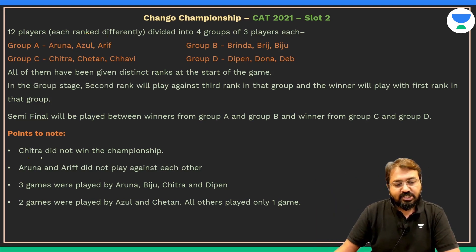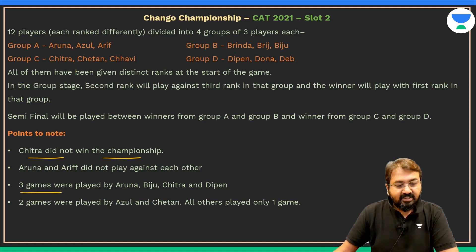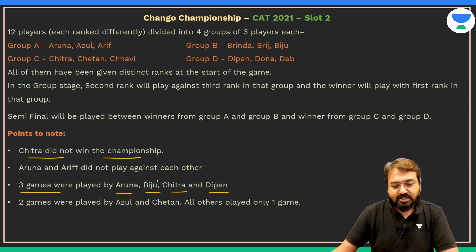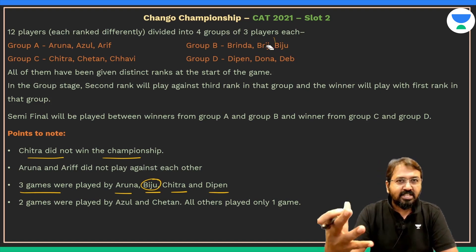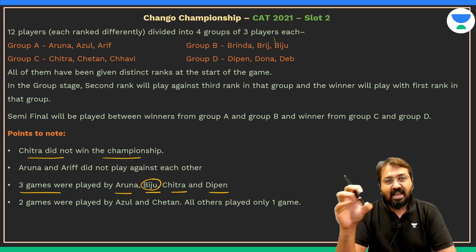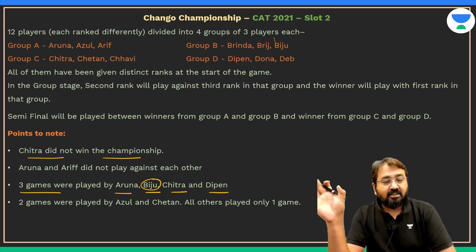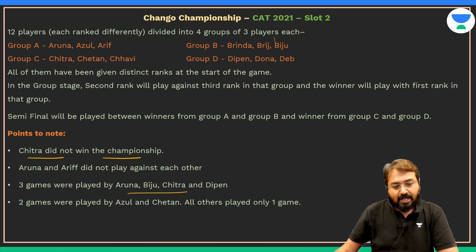Additional conditions are given: Chitra did not win the championship; Aruna and Arif did not play against each other. Three games were played by Aruna, Biju, Chitra, and Dipen. Be careful about similar-sounding names like Bridge and Biju — CAT exams often include confusing names like these to trip you up.